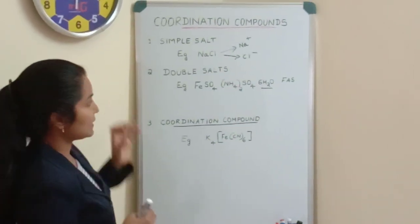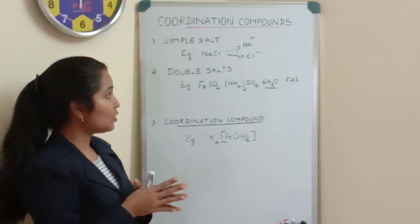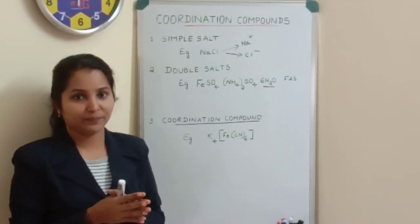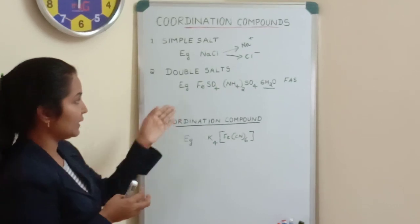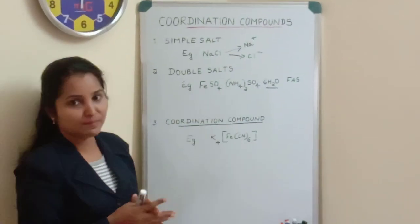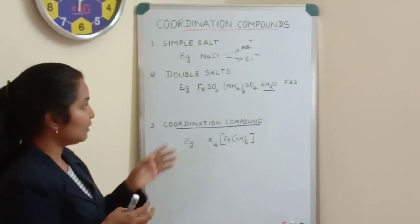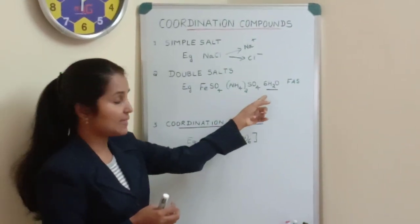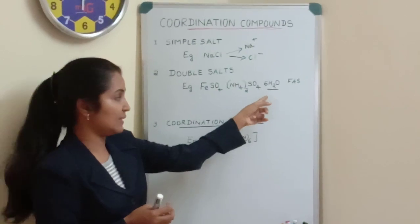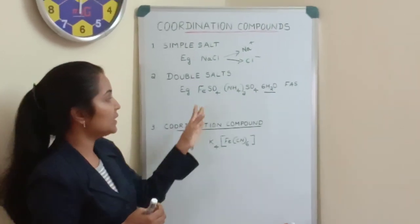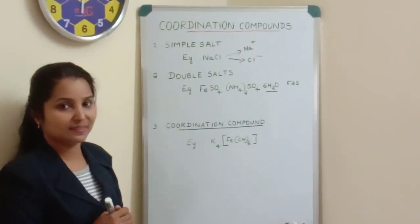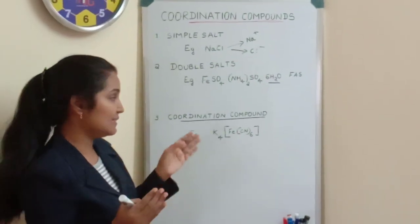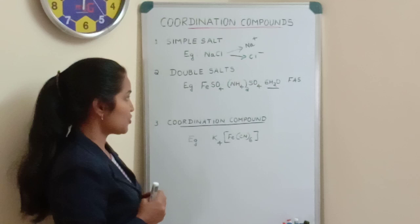What is a double salt? A double salt is a combination of two simple salts. The example given here is ferrous ammonium sulphate, with chemical formula FeSO₄·(NH₄)₂SO₄·6H₂O, where 6H₂O is water of crystallization. This is also known as Mohr's salt, which you will come across in volumetric analysis in your chemistry lab.